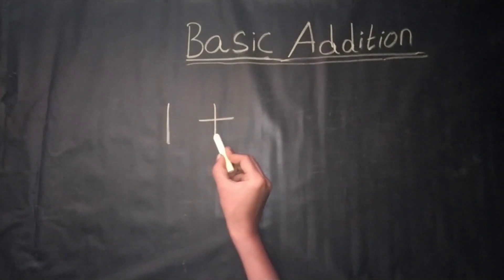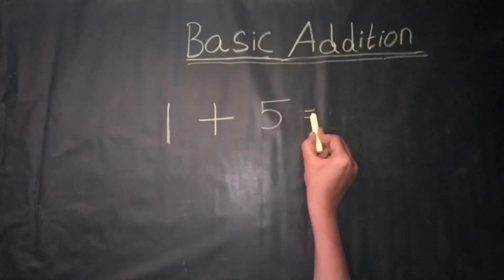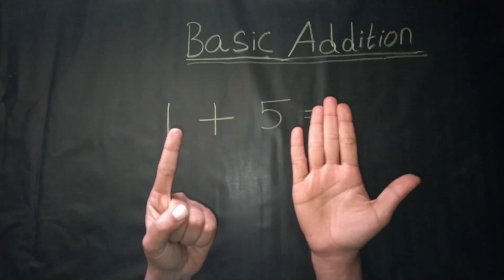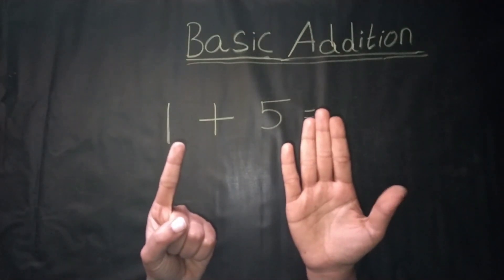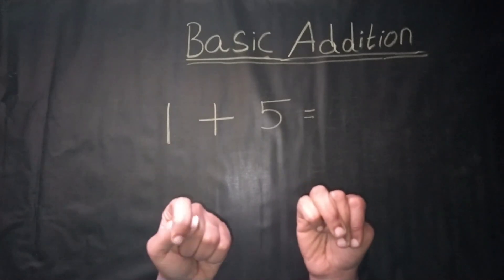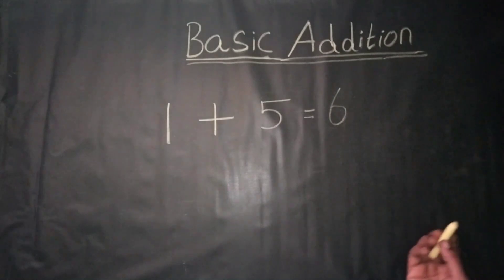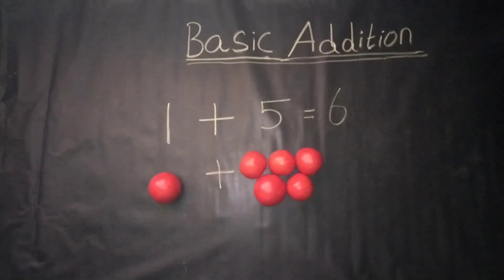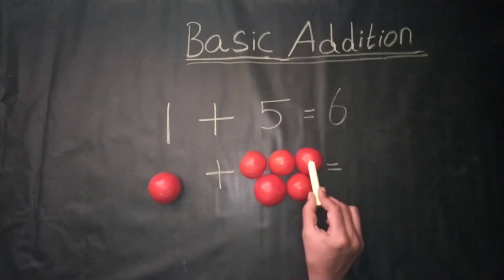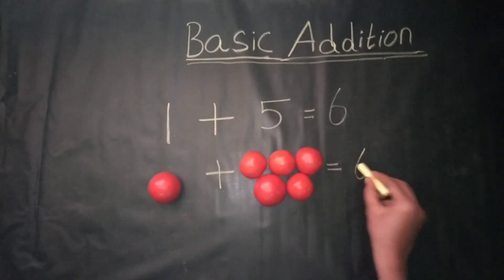Counting by objects, 1 plus 5 is equal to — counting by fingers, 1 plus 5. 1 plus 5 is equal to — counting by fingers: 1, 2, 3, 4, 5, 6. We get the answer: 6. Counting by objects, 1 plus 5 is equal to — count together: 1, 2, 3, 4, 5, 6. We get the answer: 6.